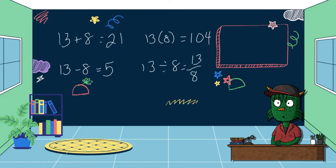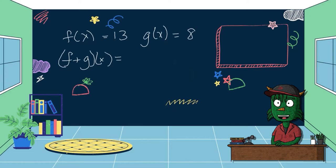I'm sure everybody is able to do those four problems, and believe it or not, combining functions is the exact same thing. Now we're going to look at it as combining functions. So I have f(x) equals 13, and g(x) equals 8. You notice the same two numbers that we had before.